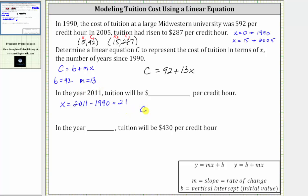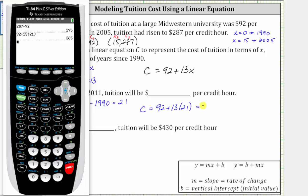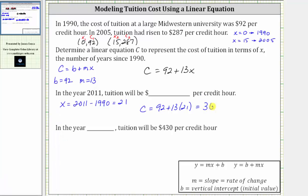C equals 92 plus 13 times 21, which equals 365. This means in the year 2011, tuition will be $365 per credit hour.